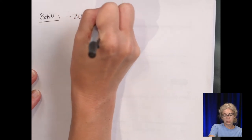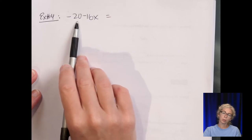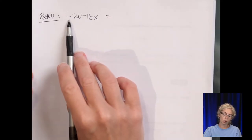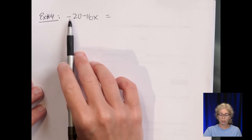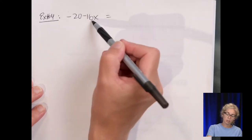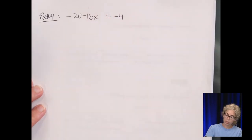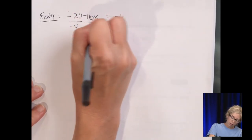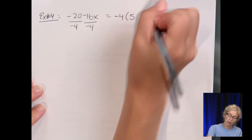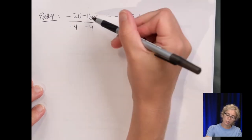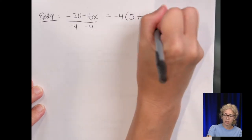Example 4: -20 - 16x. They don't have a variable in common, but 16 and 20 are both divisible by 4. Since the leading term is negative, I'm going to factor out a negative 4. Dividing both by -4: -20 ÷ -4 = 5, and -16 ÷ -4 = 4, with x staying the same. So the answer is -4(5 + 4x).